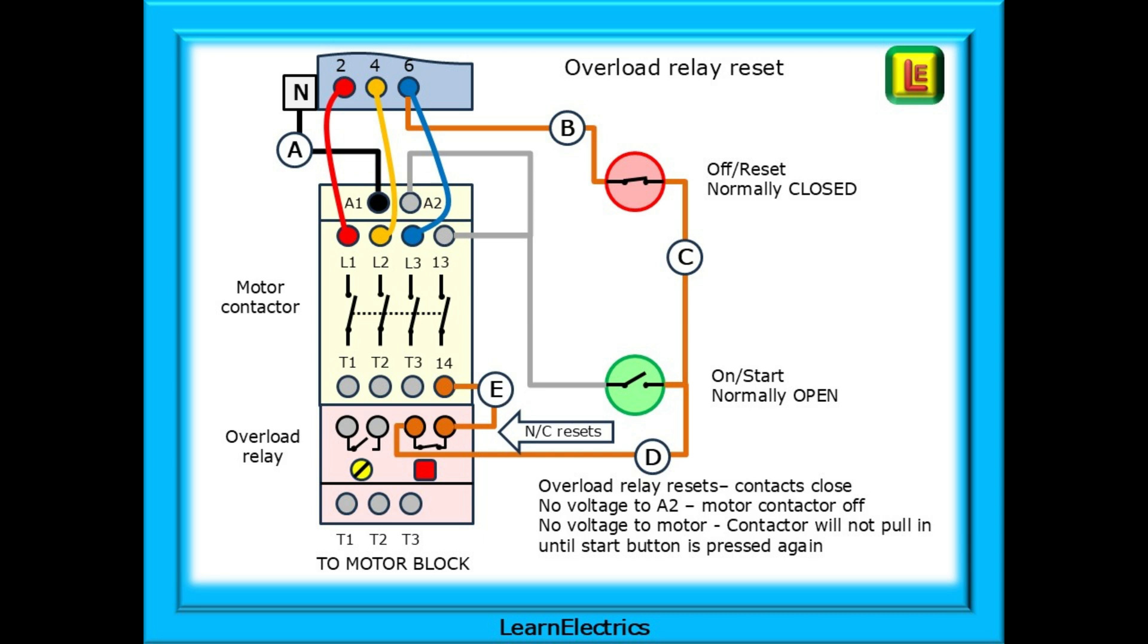So the overload relay has tripped. We've taken all the heavy parcels off the conveyor and allowed the bimetallic strip to cool sufficiently that we can reset the overload. But the motor will not restart as 230 volts cannot get beyond terminal 14. For safety we must manually restart the motor by pressing the start button again. If all is as it should be the motor will start.